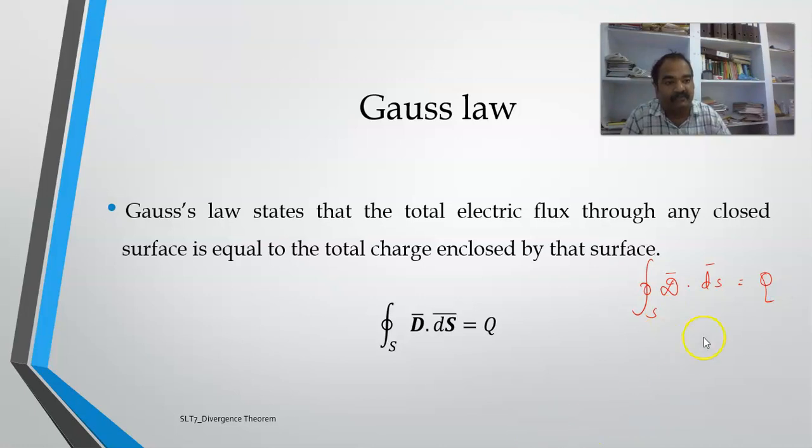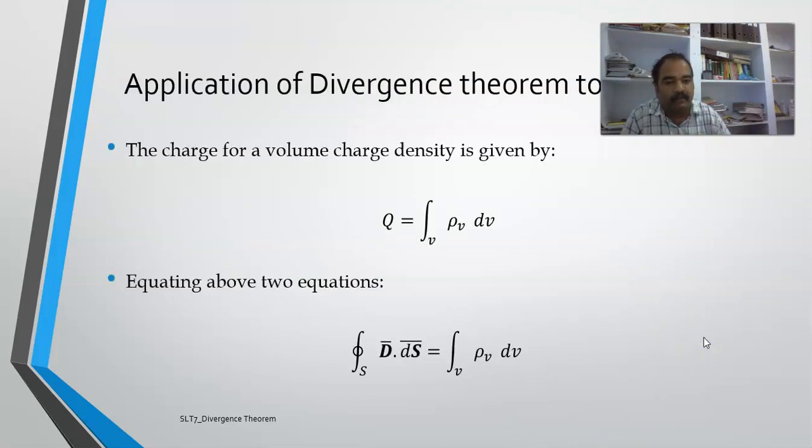Applying divergence theorem for this one. Now, we already know that for a volume charge density Q is given by integral of V ρ_v dV where this indicates volume charge density and this indicates a volume.